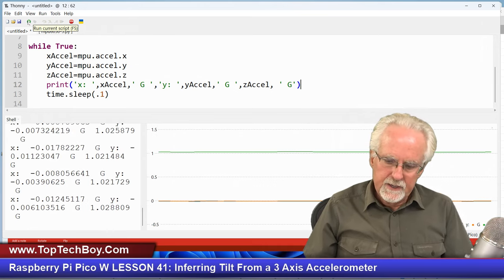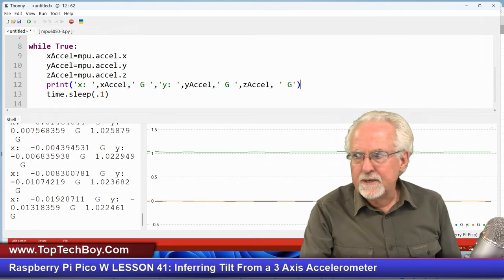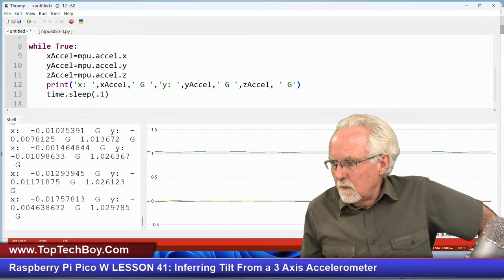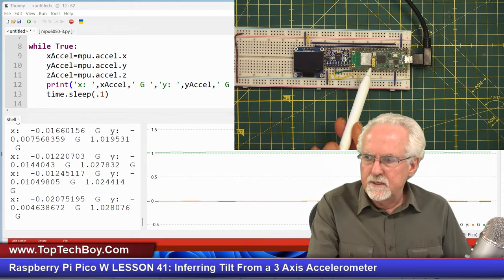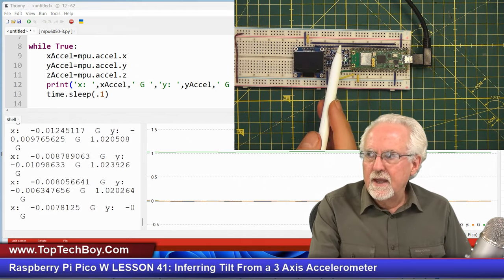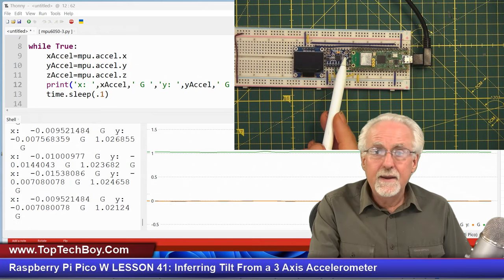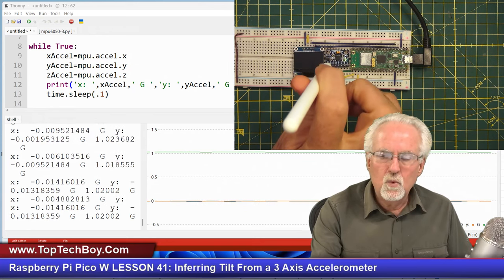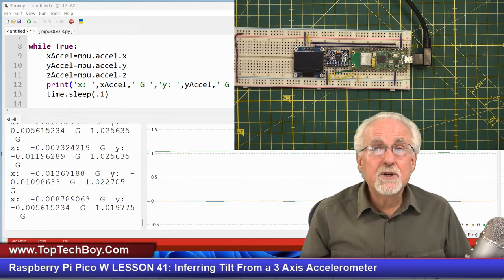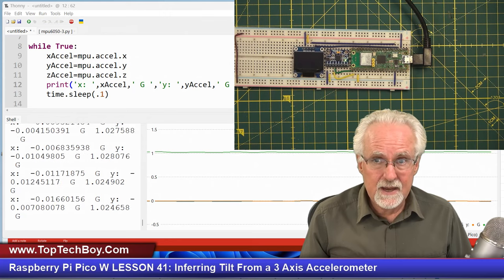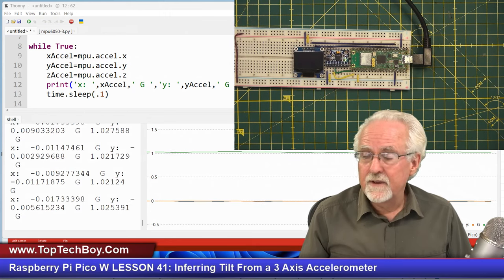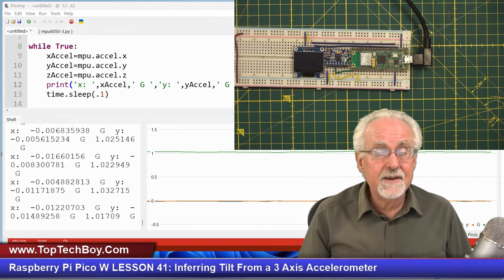Very interesting and unexpected result. You can see it's sitting still and the x and y are measuring zero, but what are we measuring? We're measuring one g of acceleration along the z-axis.